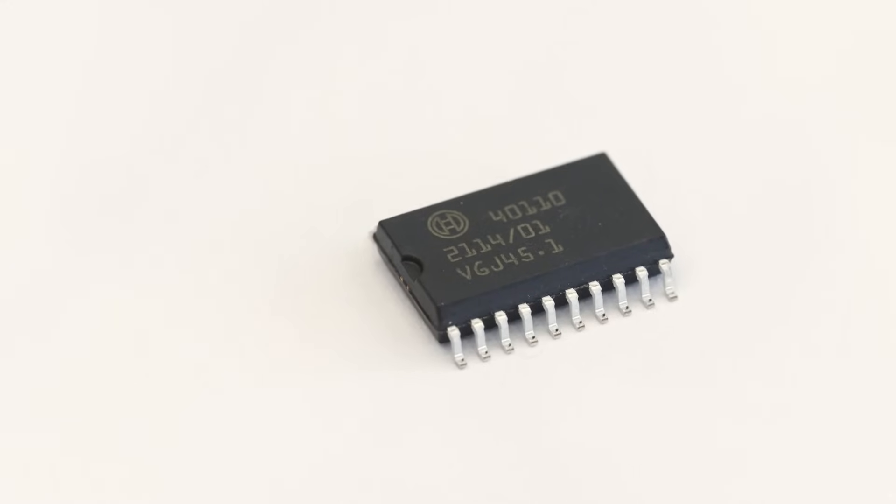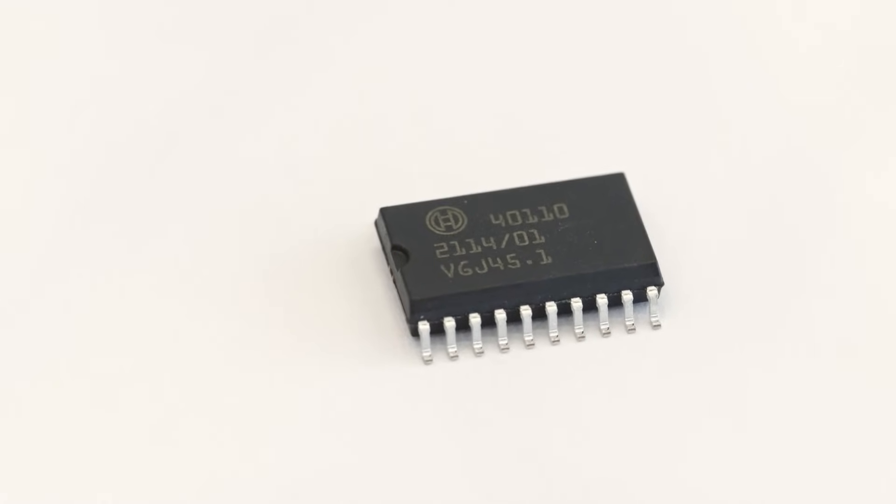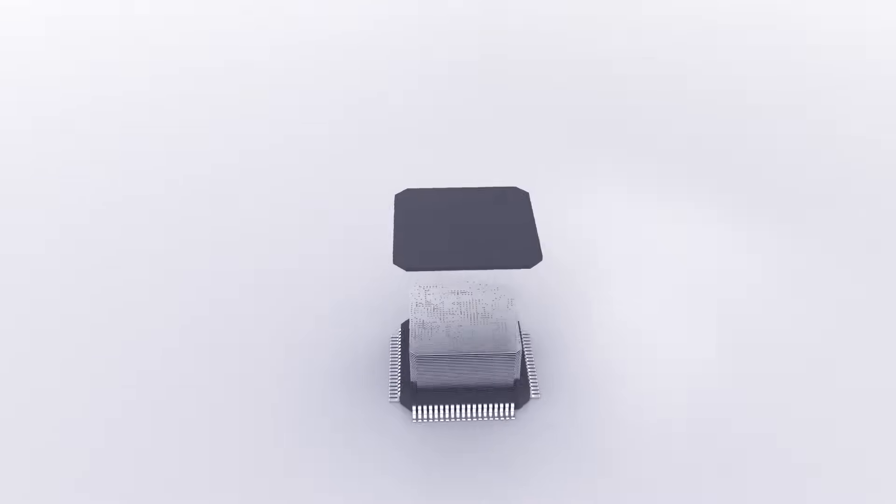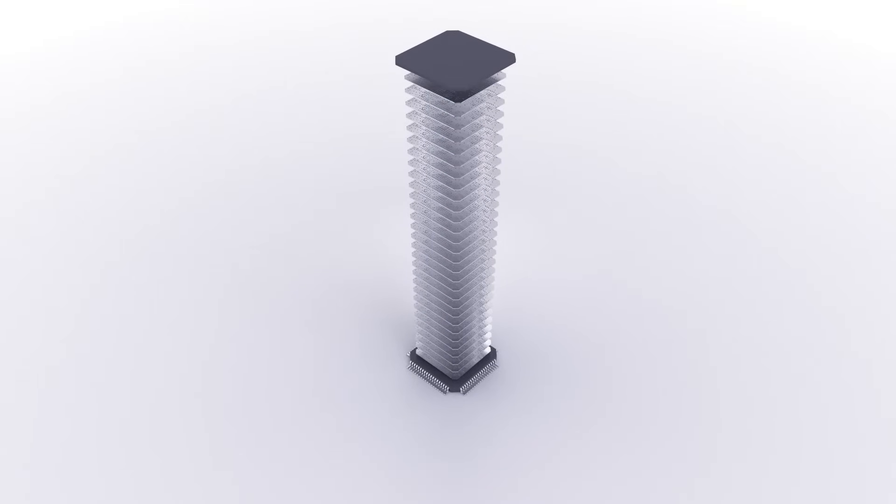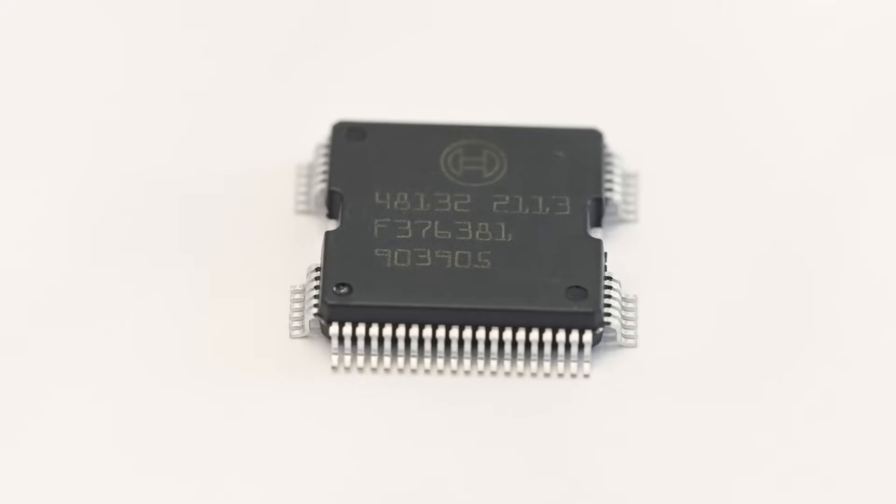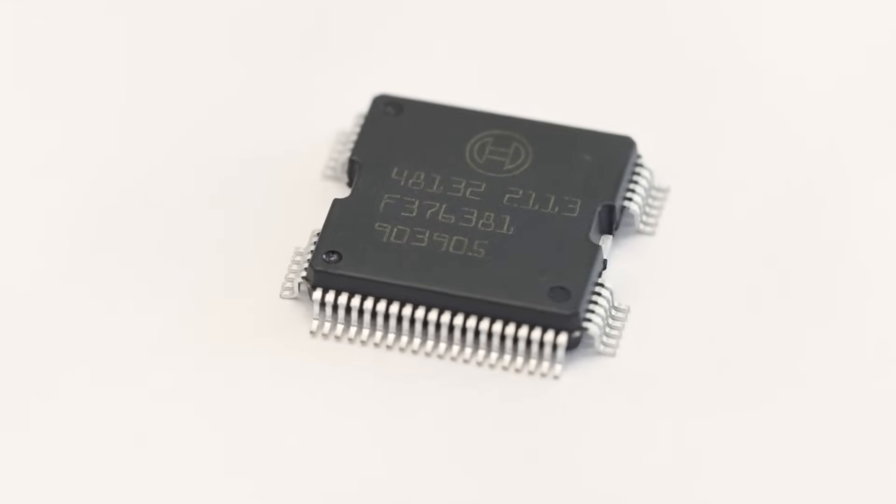Once this is completed, the microchip is assembled from as many as 30 such layers, like a mini skyscraper. Each layer has its own function. Interconnecting them makes the microchip highly complex.